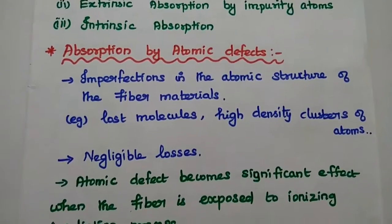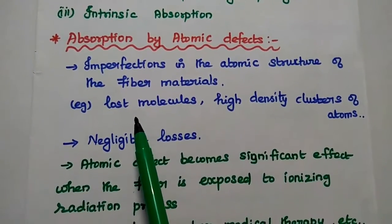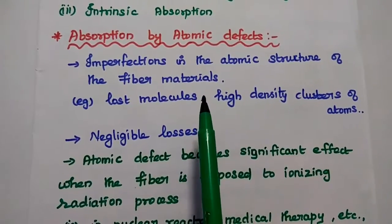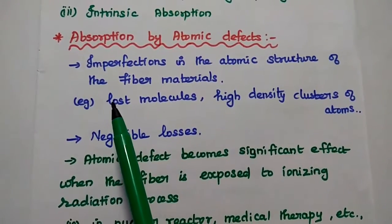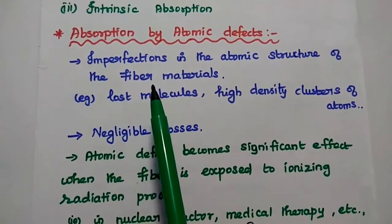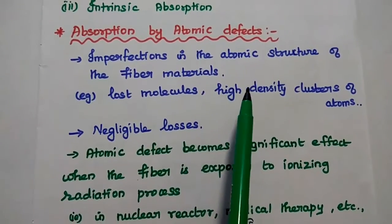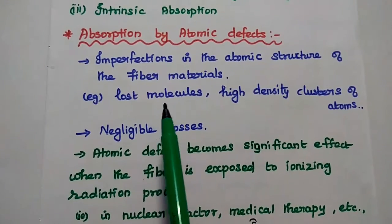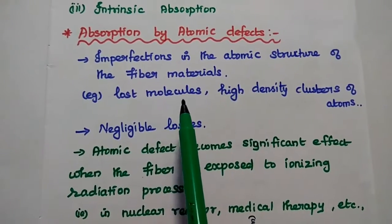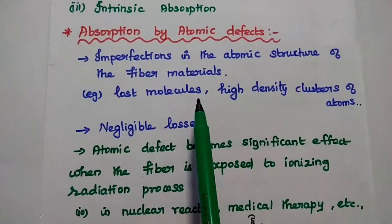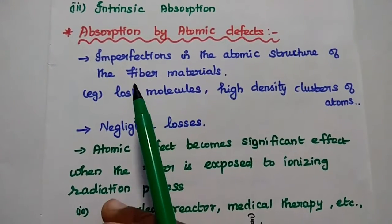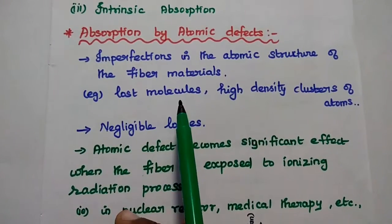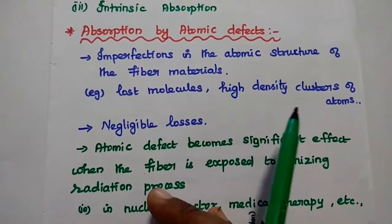Let us discuss each type in detail. The first one is absorption by atomic defects. Here, atomic defects represent the imperfections in the atomic structure of fiber material. The glass fiber is composed of randomly connected molecules, with imperfections like lost molecules or high density clusters of atoms.